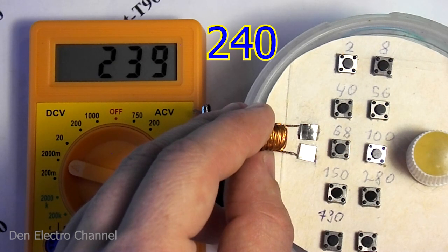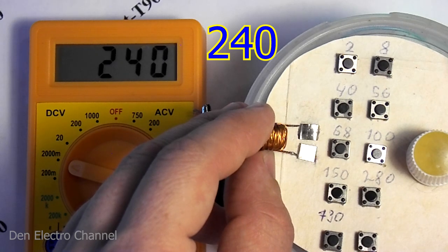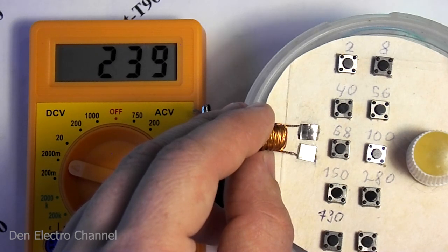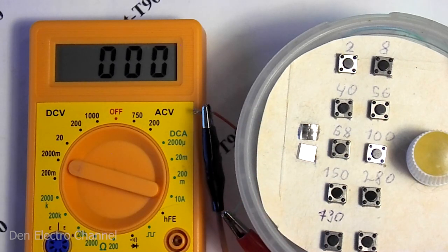It turned out the required value of about 240 microhenries. If you don't already have such a device, I recommend you do it. The link will be in the upper right corner and in the description.